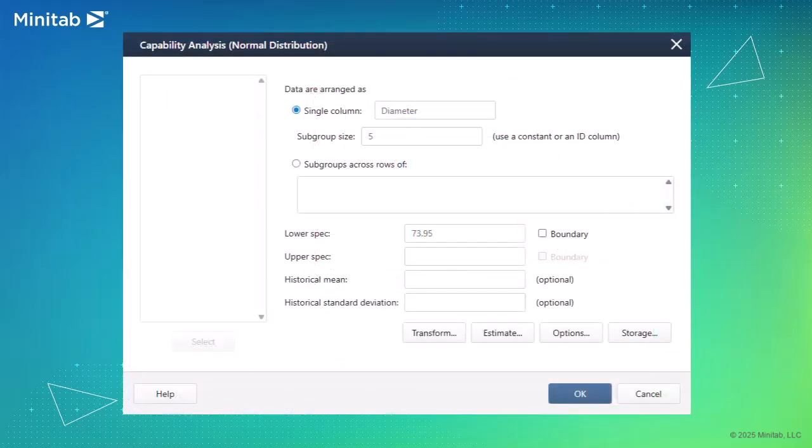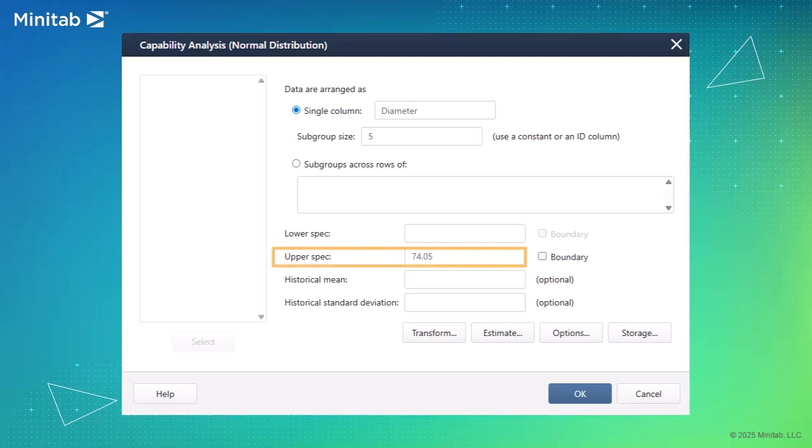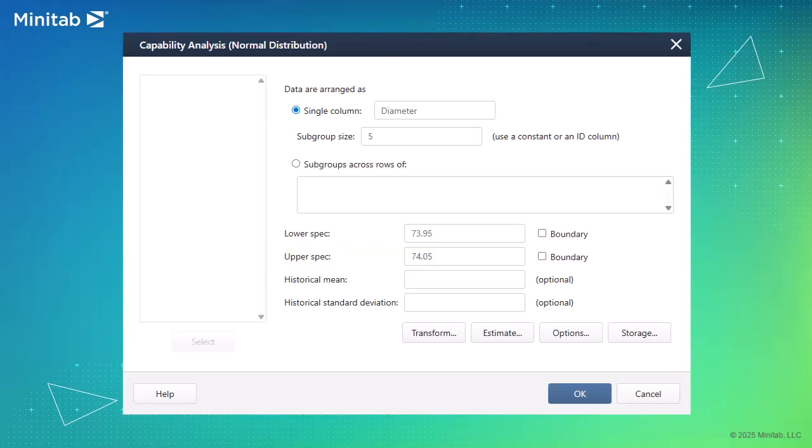To conduct a capability analysis, you need to specify at least one specification limit. It can be a lower spec limit, an upper spec limit, or you can specify both depending on requirements.